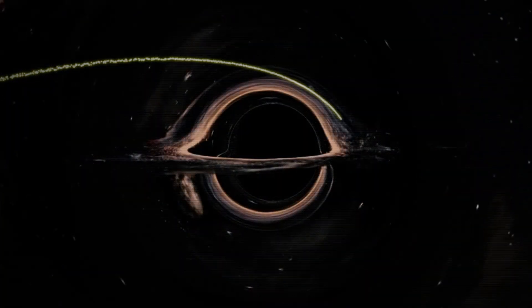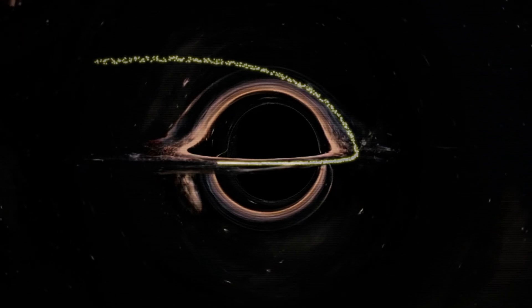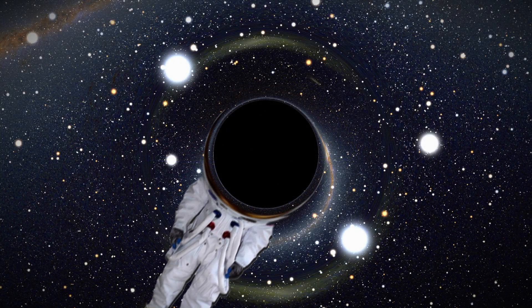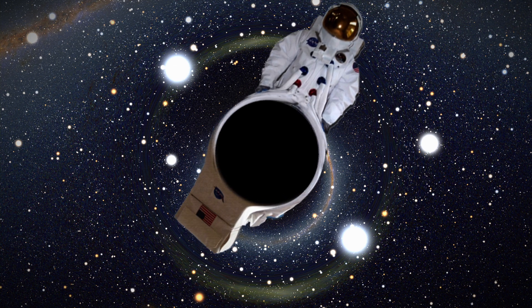As you accelerate toward the event horizon, you pass through the photon sphere. In this region, the photons reflecting off your body begin to orbit the black hole. When they make a complete orbit, they return back to your eyes, allowing you to see the back of your head.